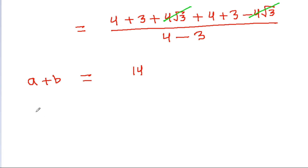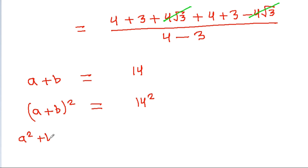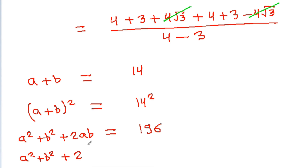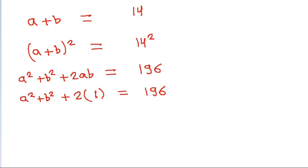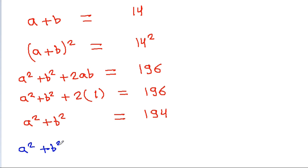If we square both sides, then (a + b) squared equals 14 squared. So a squared plus b squared plus 2ab equals 196. Substituting ab equal to 1, we get a squared plus b squared plus 2 times 1 equals 196, so a squared plus b squared equals 196 minus 2, which is 194.